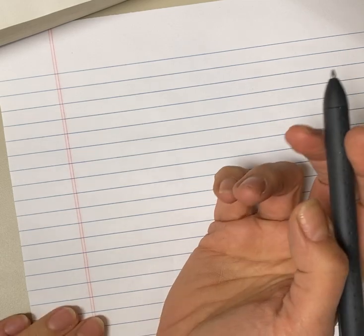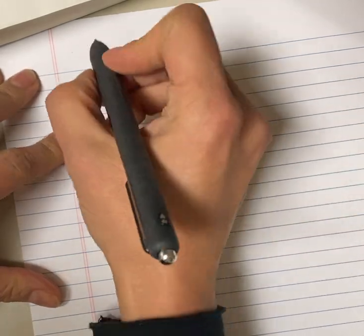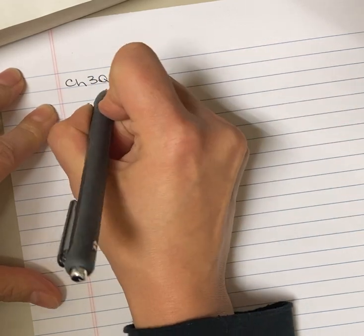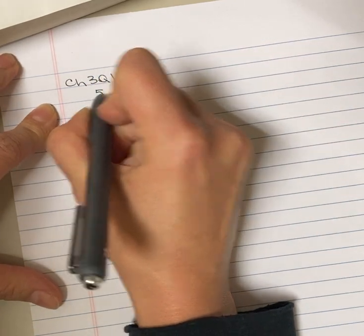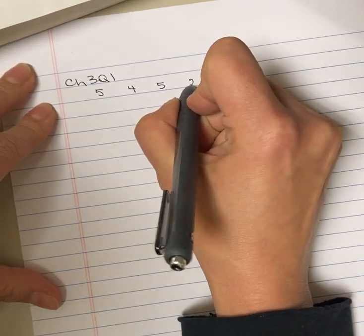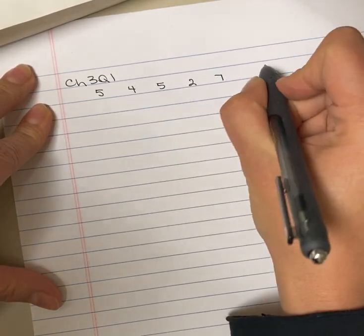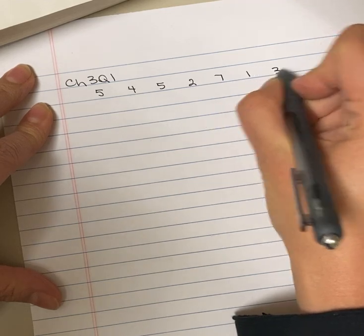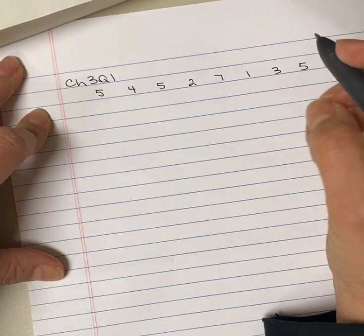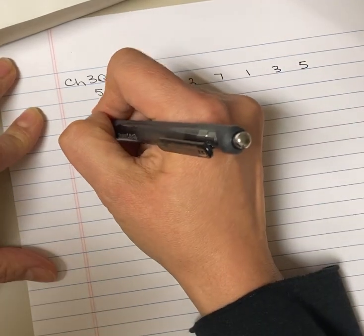The scores, just so we have them all in one location, were 5, 4, 5, 2, 7, 1, 3, 5. So we've got eight scores, and the first thing that we're going to calculate is the mean.